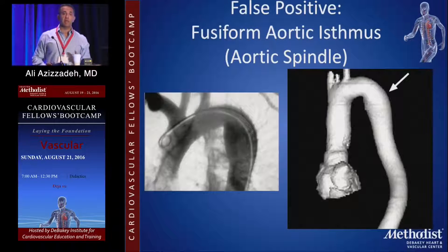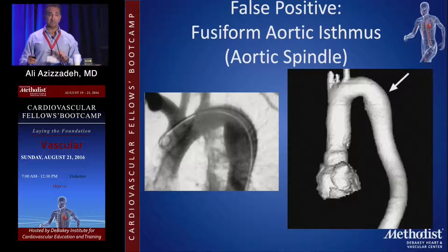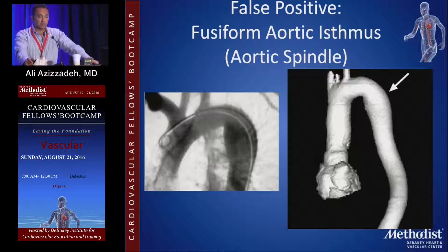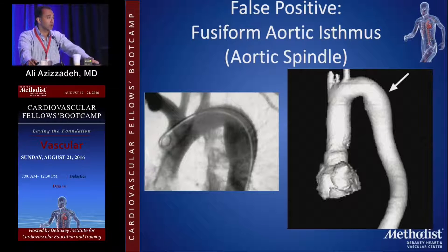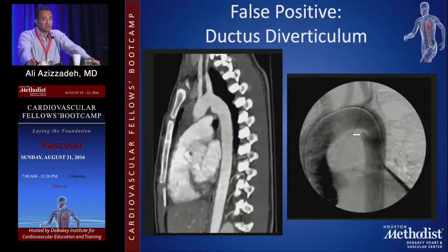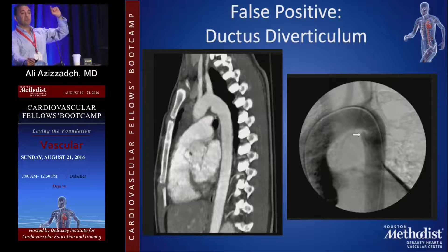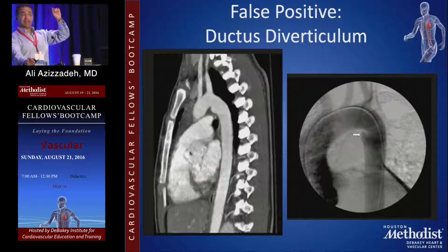There are three false positives you need to know about, because you're going to get called to the ER and make a decision right there. Number one is the aortic spindle — it's just a fusiform aortic isthmus, a normal variant where some people have that dilatation in that area. Number two is the ductus diverticulum — a remnant of ductus arteriosus — where some patients have a very smooth diverticulum at that location, the same location as the tear.